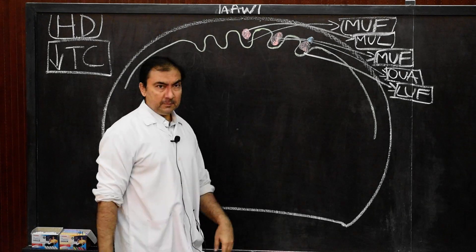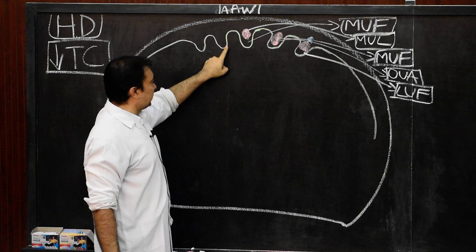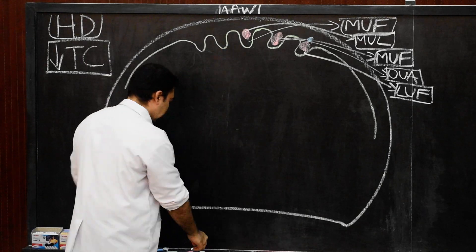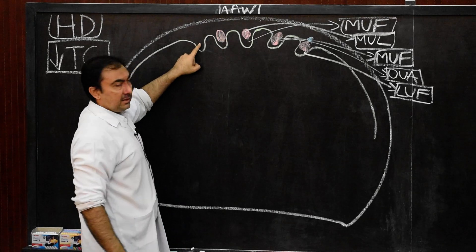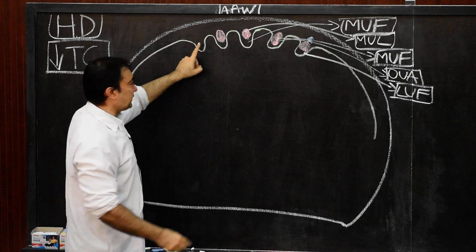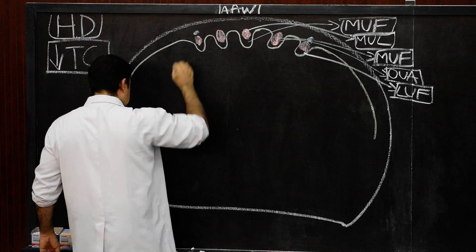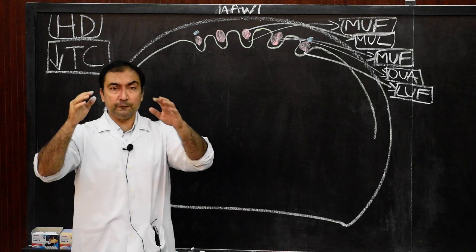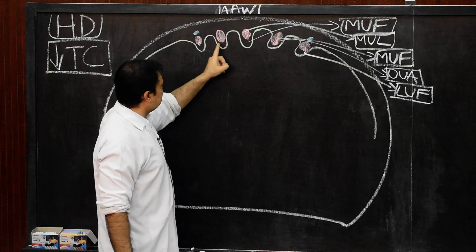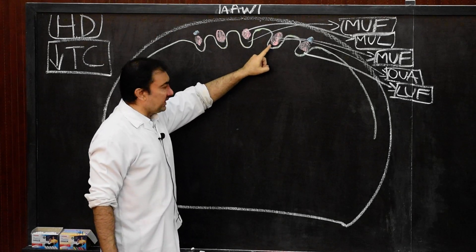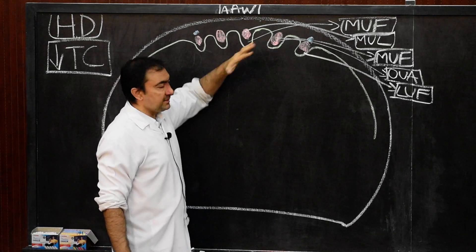On one side we have drawn; similarly it will be on the other side also. The medial umbilical fold will be produced because of the obliterated umbilical artery, and the lateral umbilical fold will be produced because of the inferior epigastric vessels. These are the peritoneal folds — medial umbilical fold, medial umbilical fold, and lateral umbilical fold — total five altogether in the anterior abdominal wall.